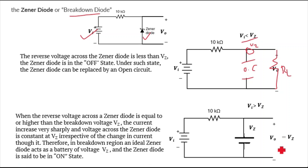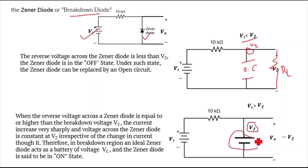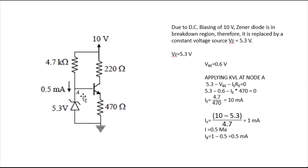In breakdown, the ideal Zener diode acts as a constant voltage battery of voltage VZ — this is the on state. The battery potential is VZ, which stays constant even as VI increases. In our numerical problem, VZ = 5.3 V.